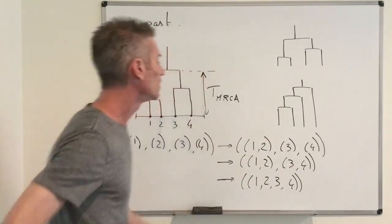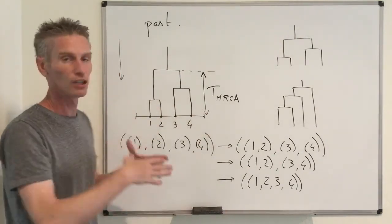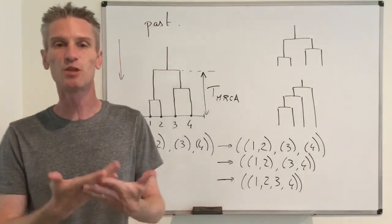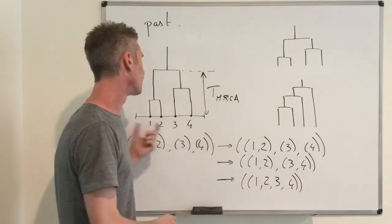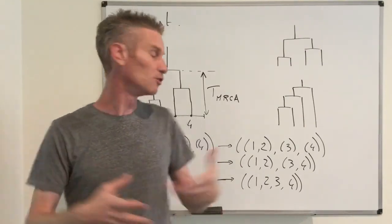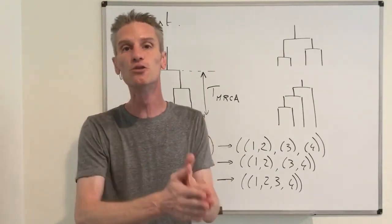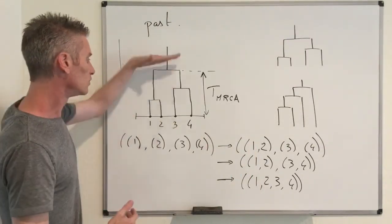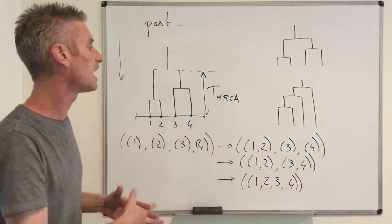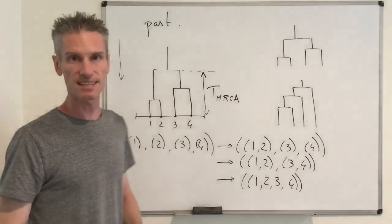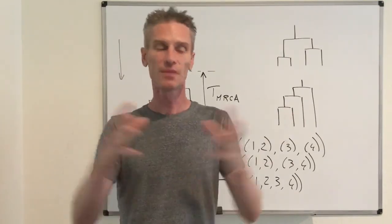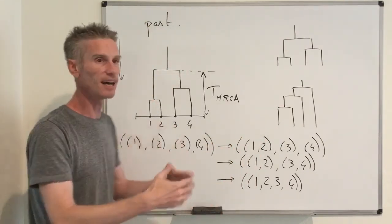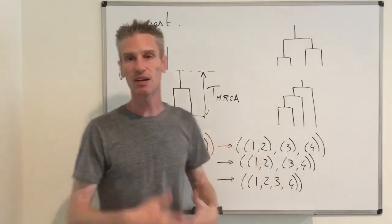The evolution rules are completely symmetric. Starting with four individuals you have 4 choose 2 = 6 possible pairs; one of those six pairs is chosen uniformly at random as the two individuals that coalesce. At each step you start with some number of sets, choose two of them uniformly at random, merge them, and continue. After n−1 steps you have one big set.